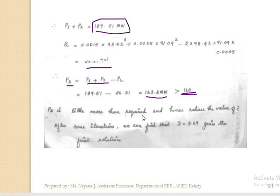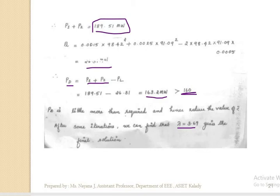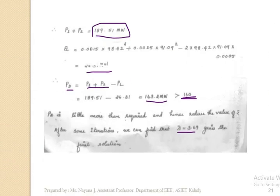Once we get P1 + P2 ≈ 189 MW, we calculate the transmission loss, and the total demand equals total power generated minus transmission loss — we get approximately 163 MW, which is greater than the required 160 MW demand. So the actual power here is slightly more than required. We can reduce lambda and repeat the iteration. These kinds of iterative problems are not usually asked in university exams, but the beta coefficient or transmission loss calculation can be asked.